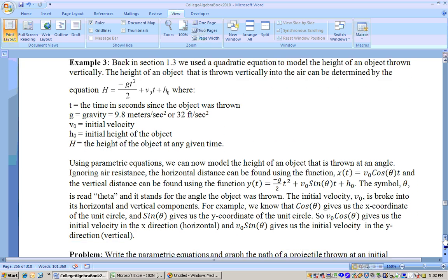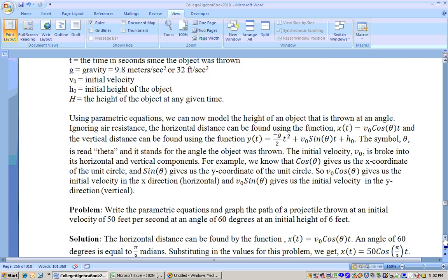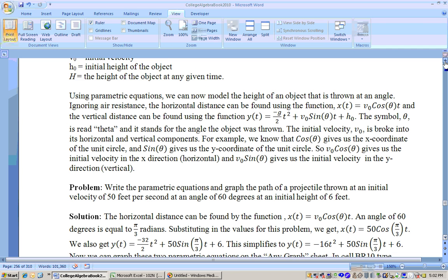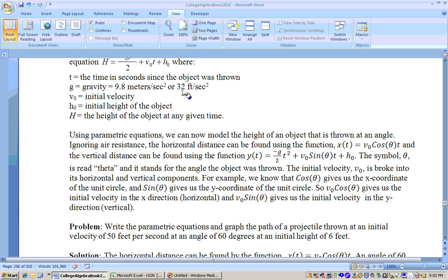So let's go ahead and do an example here. It says write the parametric equation and graph the path of projectile thrown at an initial velocity of 50, so that's your v sub nought, feet per second. That means we'll have to use for gravity negative 32, or 32 feet per second squared, since the units are in feet. If it was meters, we would be using 9.8, but this is in feet so we'll be using 32 that we'll substitute in for g.